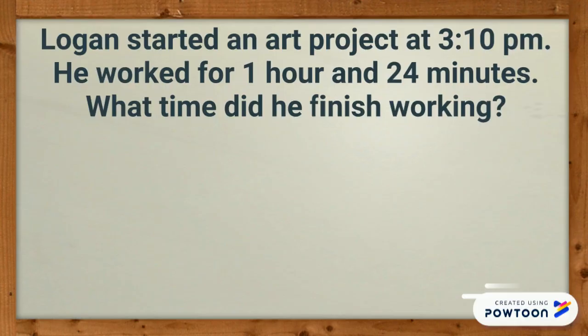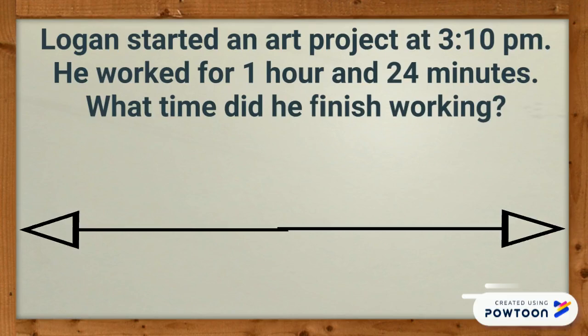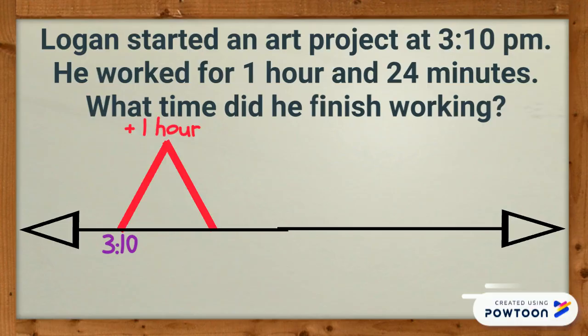First, make a number line and label the beginning time on the left side. Always try to add the largest number first. Logan worked for one hour, so I will make and label one hour mountain. 3:10 plus one hour equals 4:10.